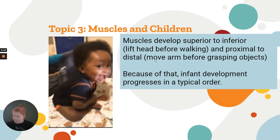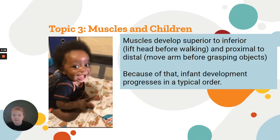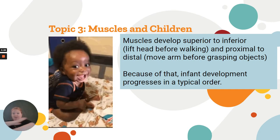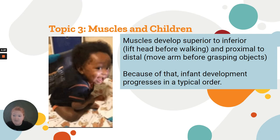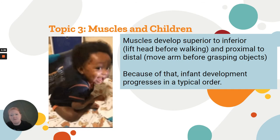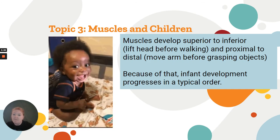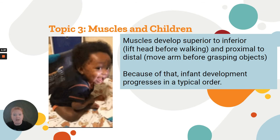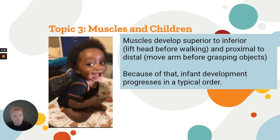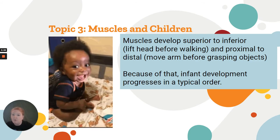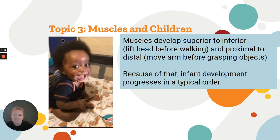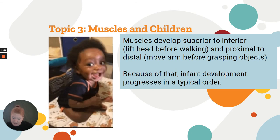Muscles in children is one of my favorite topics. Muscles develop superior to inferior and proximal to distal. Infant muscular development typically progresses in a typical order. This baby can hold its head up — that's one of the first milestones, and that's what tummy time is crucial for. Then babies typically roll over, then sit up, then crawl, and then walk.